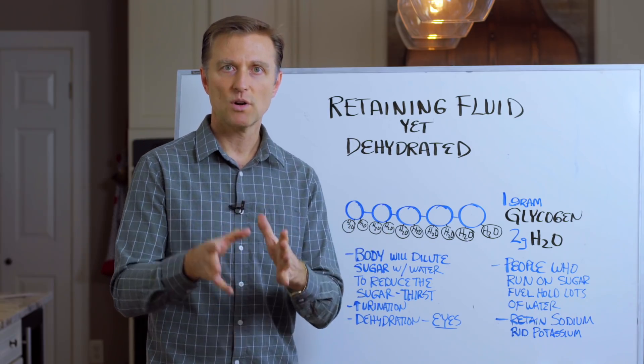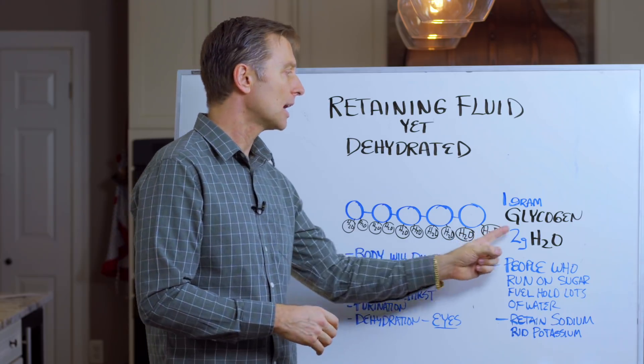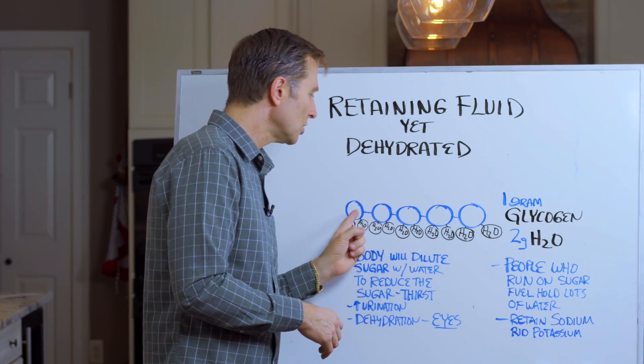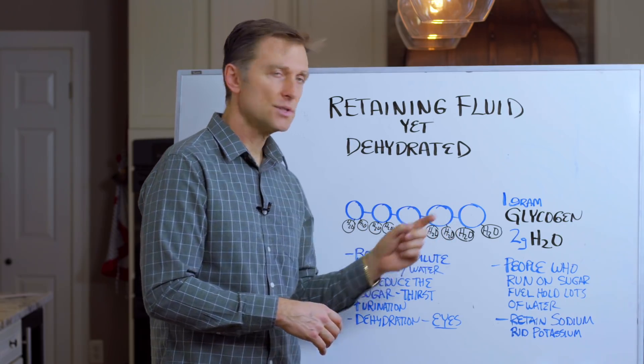Glucose is stored in the body as something called glycogen. So glycogen is a string of glucose molecules. Glucose is sugar.